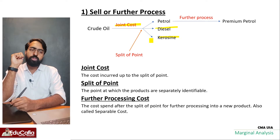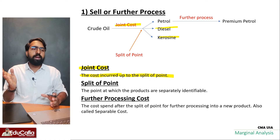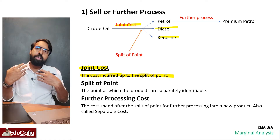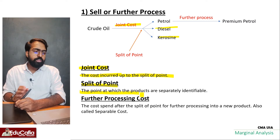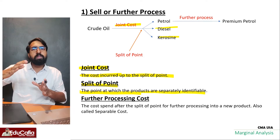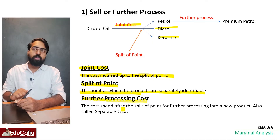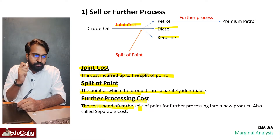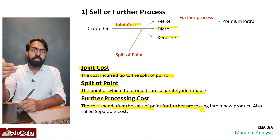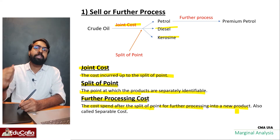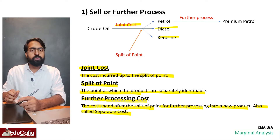Joint cost is the cost incurred up to the split-off point — it is the same regardless of which product you choose. Further processing cost, also called separable cost, is the cost spent after the split-off point to process a product further into a new, more refined product.